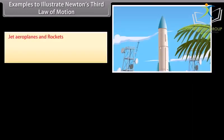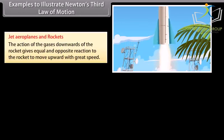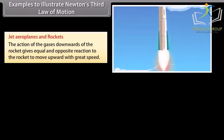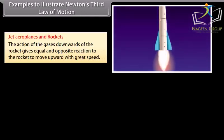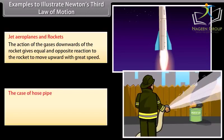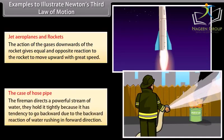Jet aeroplanes and rockets: the action of the gases downwards of the rocket gives equal and opposite reaction to the rocket to move upward with great speed. The case of hose pipe: the fireman directs a powerful stream of water. They hold it tightly because it has tendency to go backward due to the backward reaction of water rushing in forward direction.